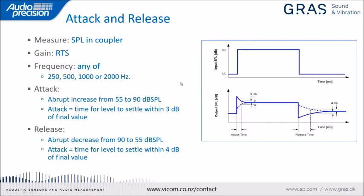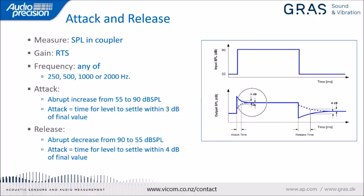For hearing aids with automatic gain control, we also measure attack and release. A sine signal is generated at 250, 500, 1k, or 2 kHz. We abruptly increase the input from 55 to 90 dB SPL and measure how long it takes the output envelope to settle within ±3 dB of its final level — that's the attack time. For release, we step from 90 down to 55 dB SPL and measure the time to settle within ±4 dB of the final value.